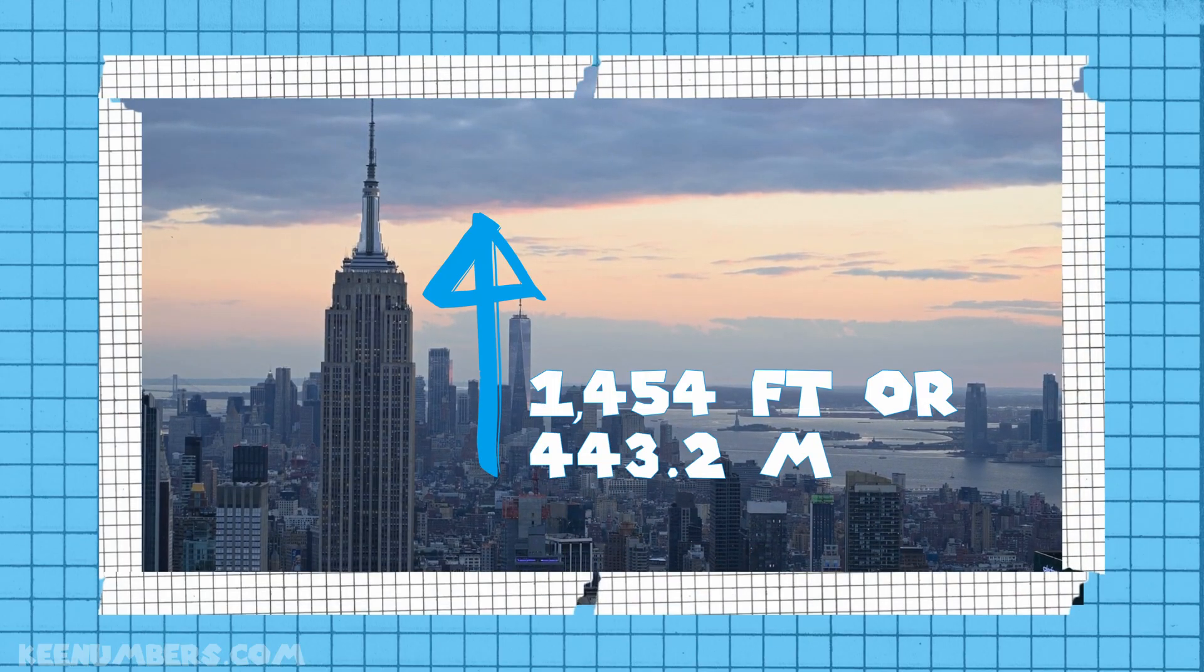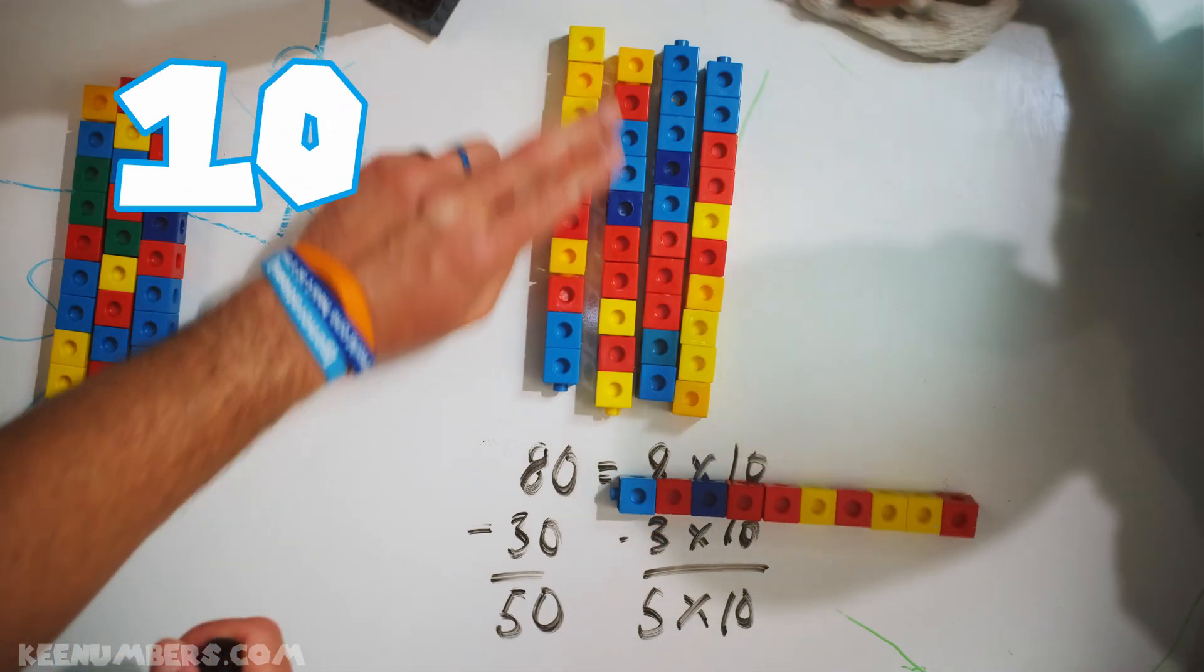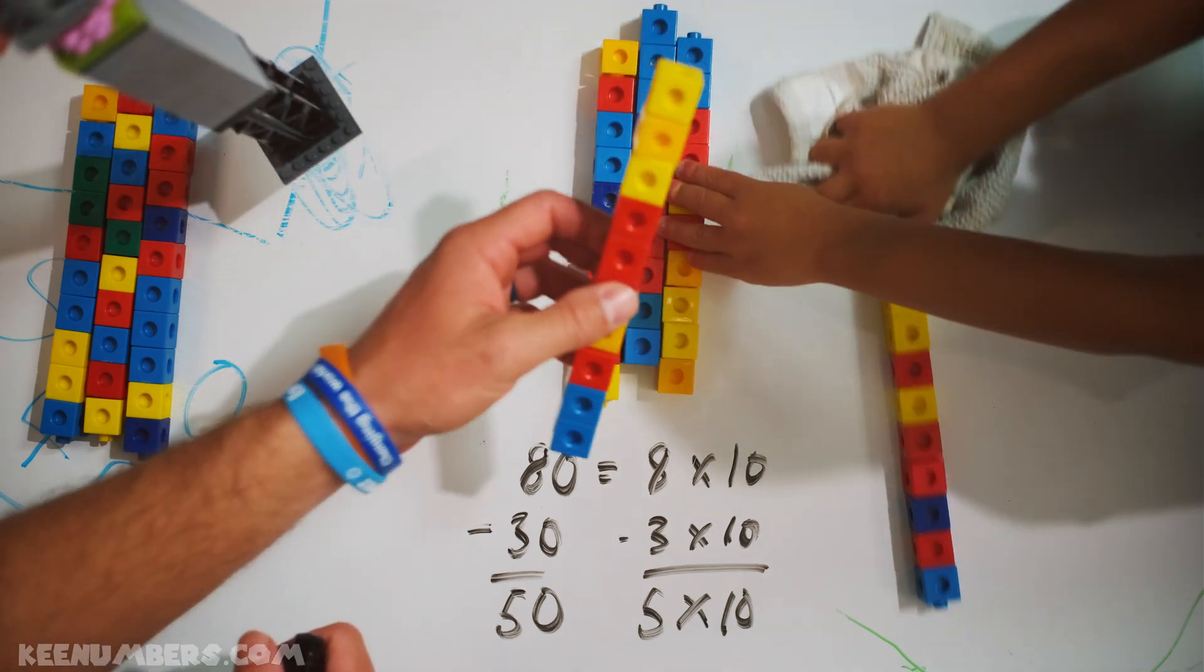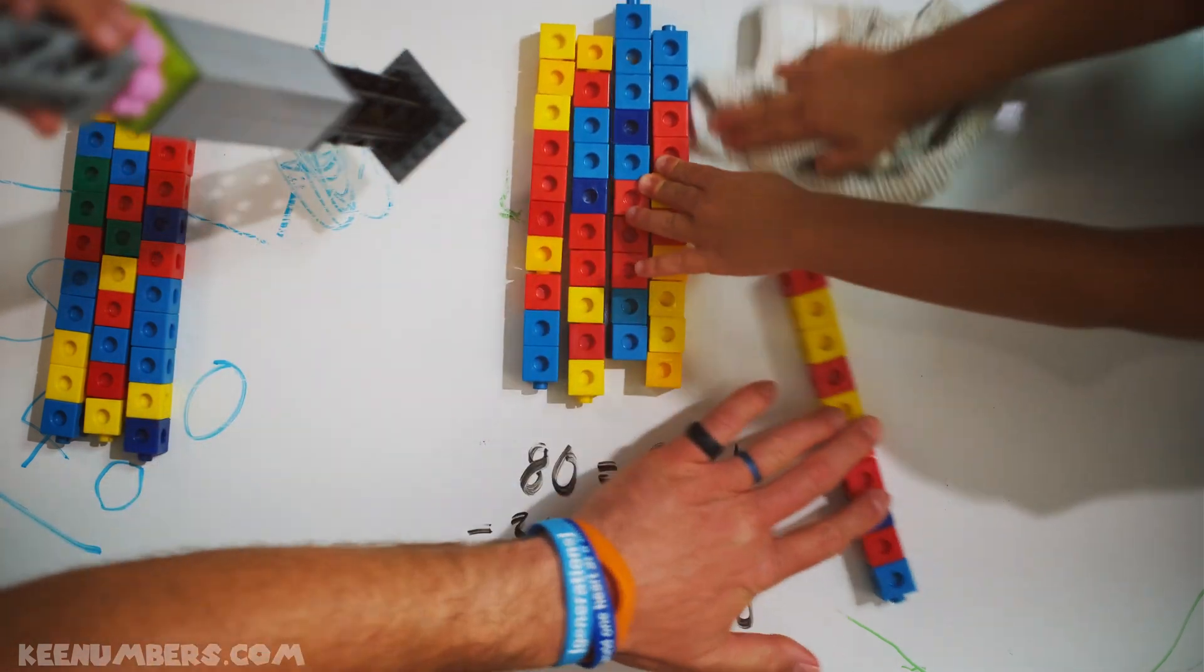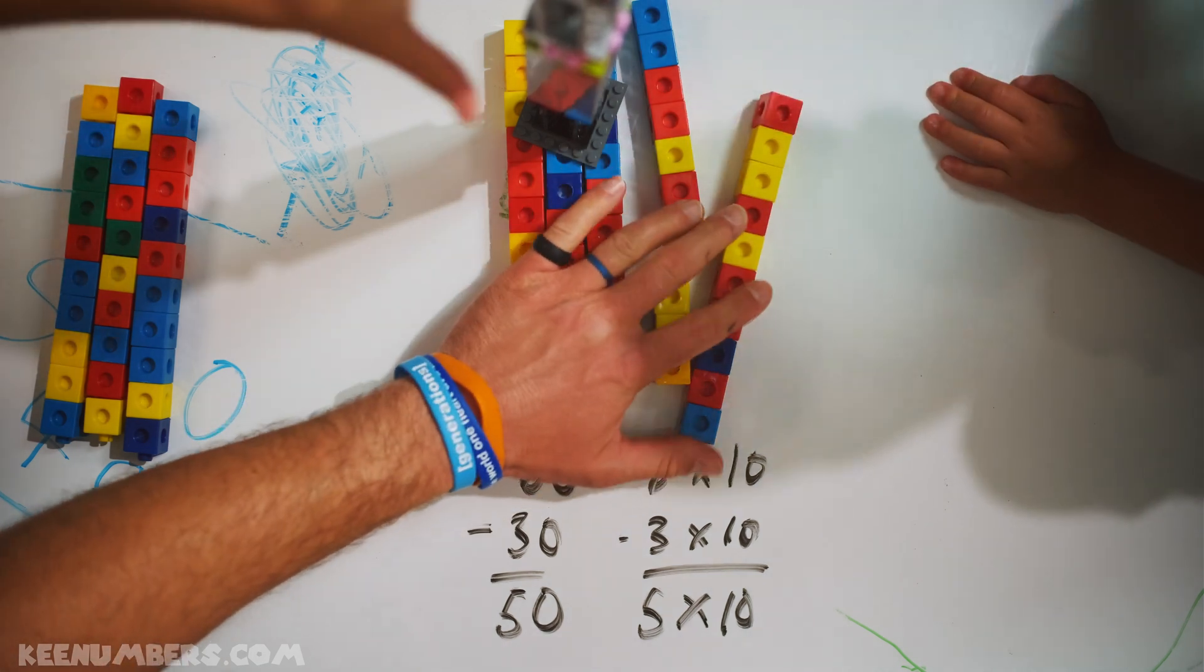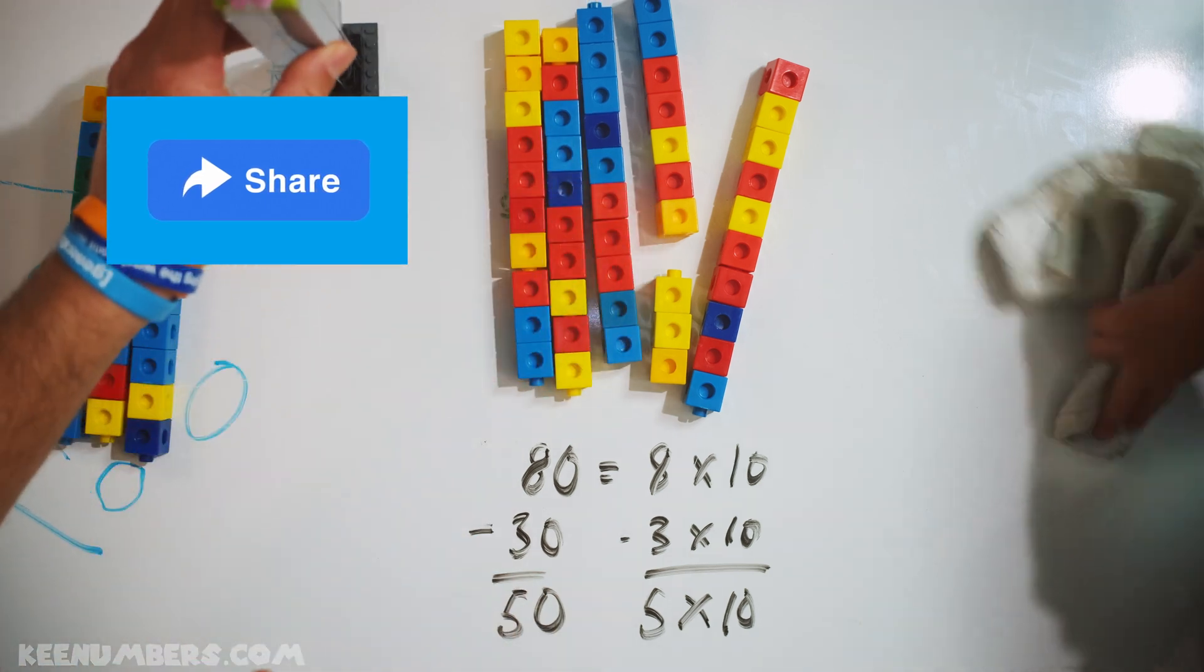Empire State Building. Again, you could go 2, 4, 6, 8, 10, 12, 14, 16, 18, 20, but that takes too long. It's so much easier just to count with stacks of 10. And that is why you are really just subtracting the 8 and the 3. That's how you get the 5. Empire State Building.